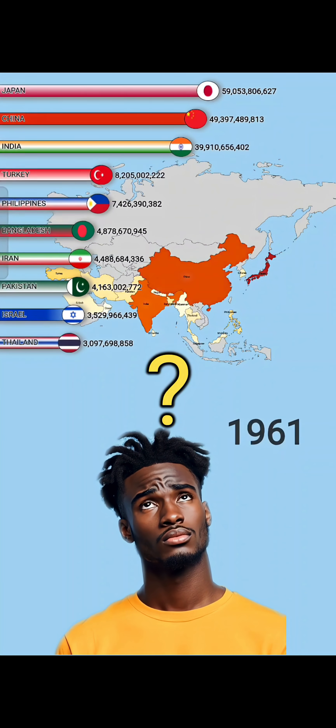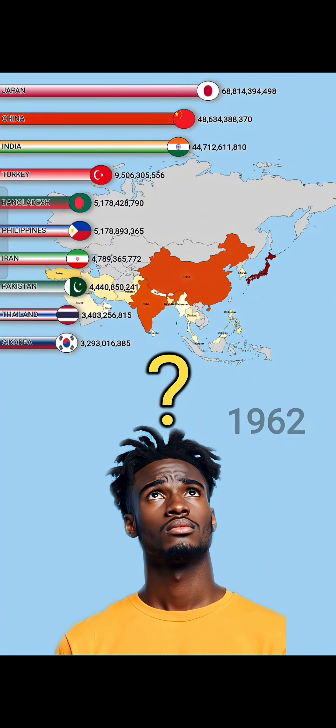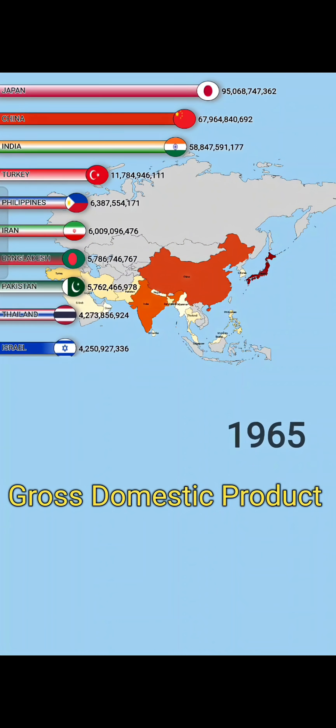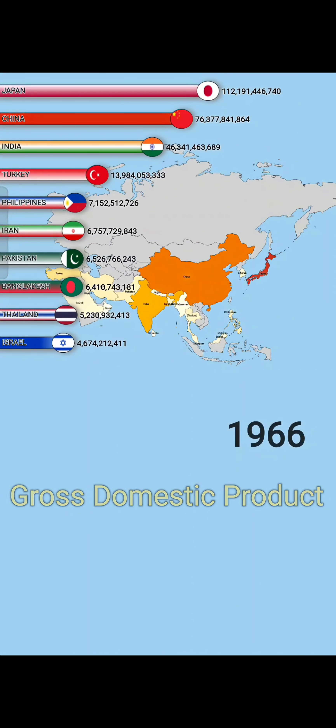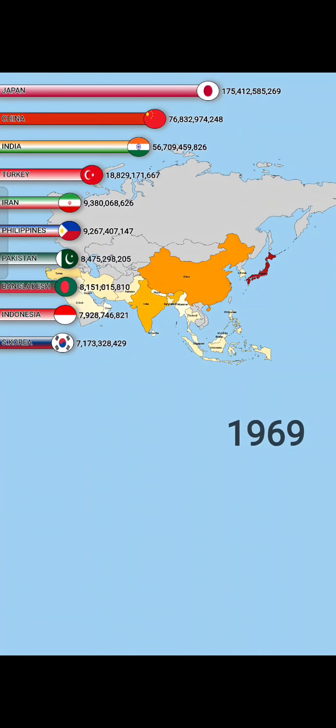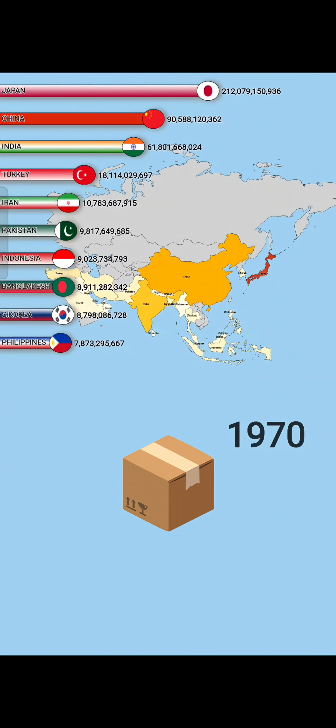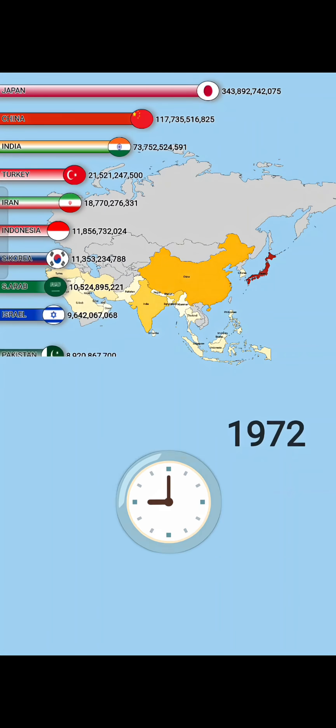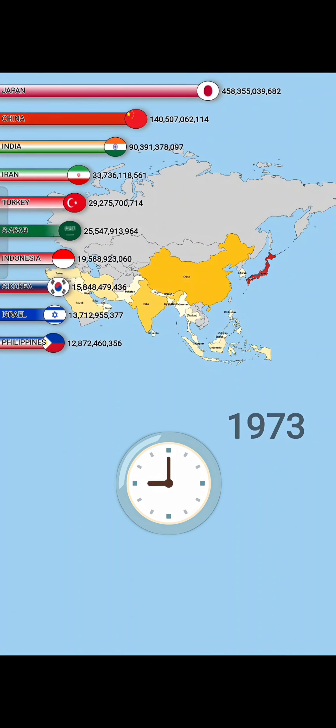What is GDP and how is it calculated? GDP, or Gross Domestic Product, measures the total value of all finished goods and services produced in a country during a specific period.